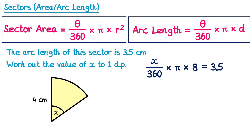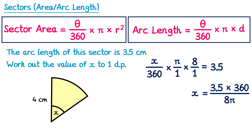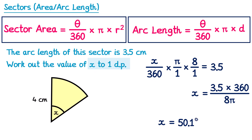To solve it, I'm going to rewrite pi and 8 as fractions over 1. We can now multiply the fractions on the left hand side: on the top we have x times pi times 8, which is 8 pi x, and on the bottom 360 times 1 times 1 is just 360. So 8 pi x over 360 equals 3.5. Next we multiply both sides by 360 to cancel it on the left, then divide both sides by 8 pi to isolate x. So x equals 3.5 times 360 divided by 8 pi. Typing that into your calculator and rounding to one decimal place gives 50.1 degrees.